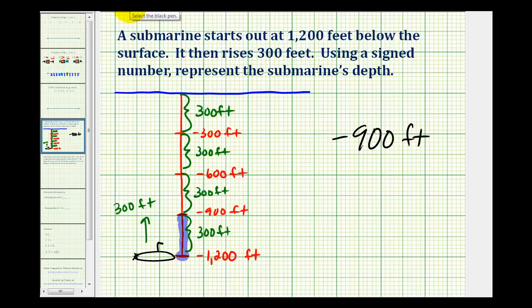So this question is leading us to addition of integers. We could write this as an addition problem of negative 1,200 plus 300, which would be negative 900. Again, it's negative 1,200 because it's that far below the surface, and then plus positive 300 because we're rising 300 feet. But we'll talk more about the formal rules for adding integers in the next section.